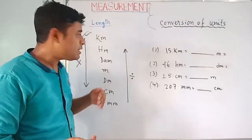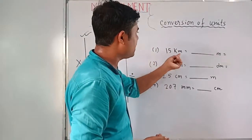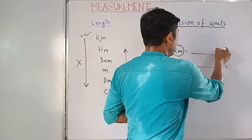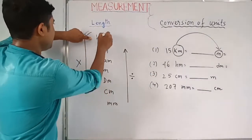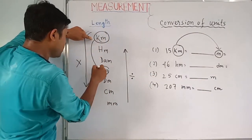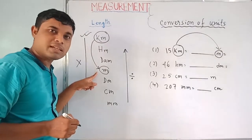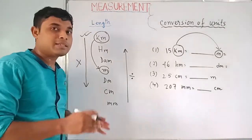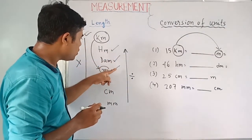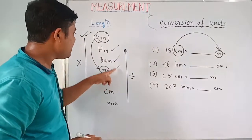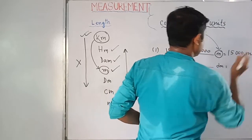Example: 15 kilometers equals how many meters? Kilometer to meter — you are moving from higher to lower unit, so we multiply. Count the steps from kilometer to meter: 1, 2, 3 — three places. So multiply by 1000. 15 × 1000 = 15,000 meters.